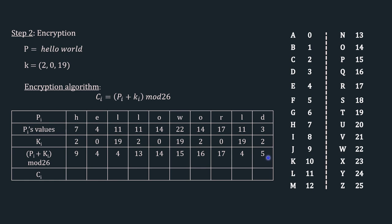The final step is CI. Using the mapping table to find the corresponding alphabet: 9 is J, 4 is E, 4 is E, 13 is N, 14 is O, 15 is P, 16 is Q, 17 is R, 4 is E, 5 is F, and 5 is F. The cipher text is JEENOPQREFF.